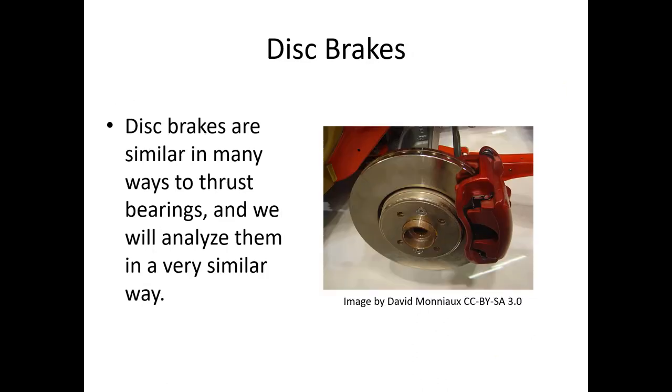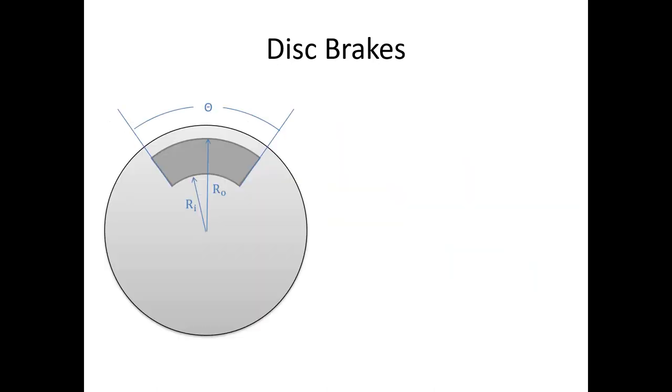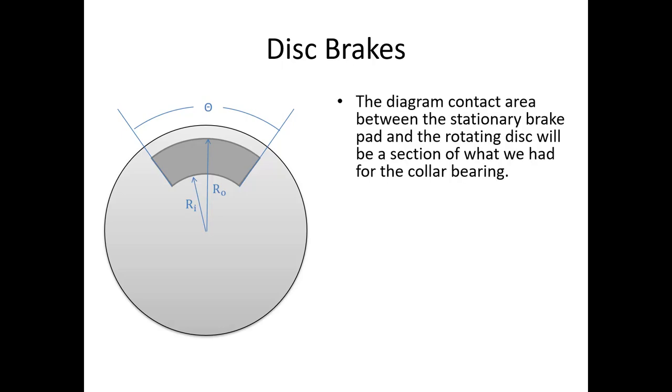Another instance where we have disk friction is disk brakes. These are similar in a way, but rather than having something rotating against the stationary surface, we actually can have the surface rotating underneath the stationary brake pads. They're very similar to the circular annulus we had before in that they're basically just a section of a circular annulus. The shape might not be exact, but we can at least use this for an approximation. The contact area between the stationary brake pad and the rotating disk is going to be a section of what we had for the collar bearing.